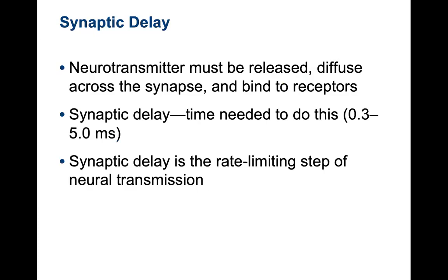The synaptic delay is a phenomenon in which neurotransmitter must be released and diffuse across the synapse, then bind to receptors. Synaptic delay is the time needed to do this — typically anywhere from 0.3 to 5 milliseconds. The synaptic delay is the rate-limiting step of neurotransmission.